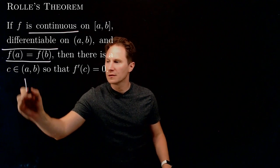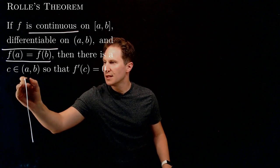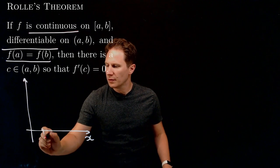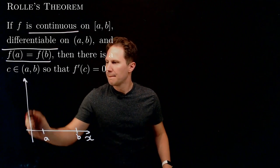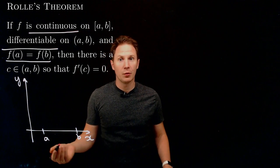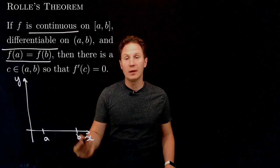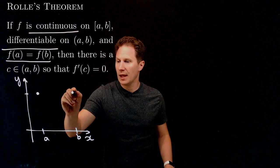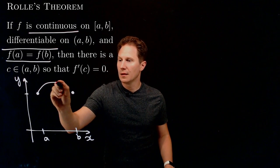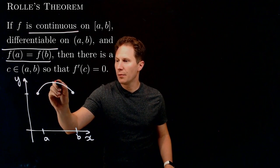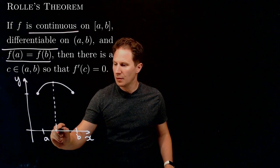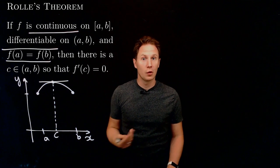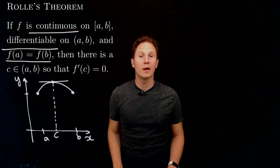The intuition behind Rolle's theorem is this: if we have a function that is continuous on a closed interval [a, b], differentiable for every point between a and b, and has the same endpoint values, then there will be at least one point between a and b — called c — where the tangent line is horizontal, meaning the derivative at that point is zero.